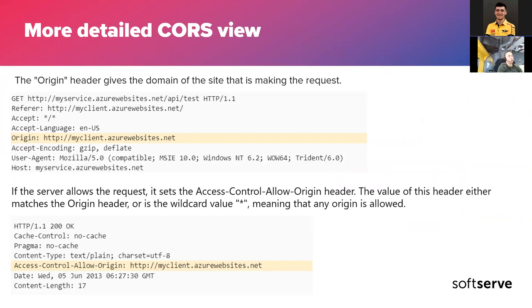In more detail: CORS uses the Origin header which the browser sends, and in that way we understand who originated the request. The browser can block the request to the server with the CORS policy requirements. If we configure our web server to allow an appropriate list of origins with appropriate headers or methods like POST, GET, OPTIONS, the browser will allow those requests. The 'Access-Control-Allow-Origin' header means that origin is allowed to make CORS requests — you've probably noticed this header in responses during application development.